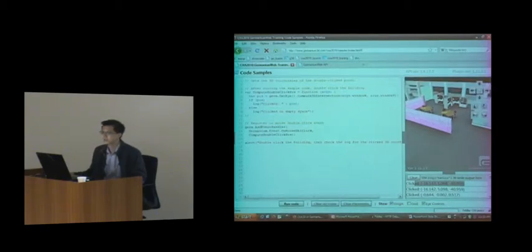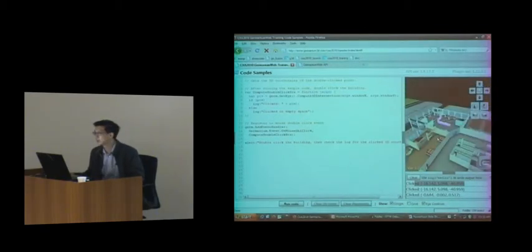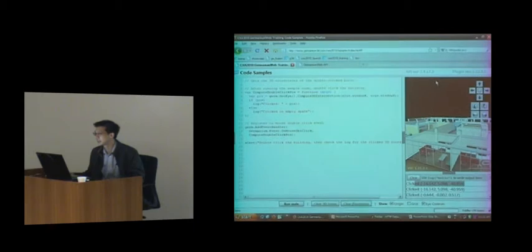One more thing to note is that it's possible that I'm actually double clicking on empty space, like say I double click on the sky. If that happens, this compute 3D intersection will return null because I didn't click on anything 3D. You can check for that by detecting whether it's null, and if not, just say click on empty space.